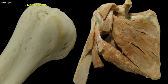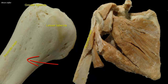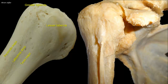The greater tubercle extends down as the lateral lip of the intertubercular groove, which receives the attachment of pectoralis major. The lesser tubercle extends down as the medial lip of the intertubercular groove, which receives the attachment of teres major. The ribbon-like twisted tendon of latissimus dorsi is received in the floor of the intertubercular groove. The upper part of the groove is bridged by the transverse ligament, which converts the groove into a tunnel for the exit of the tendon of the long head of biceps from inside the capsule of the shoulder joint.